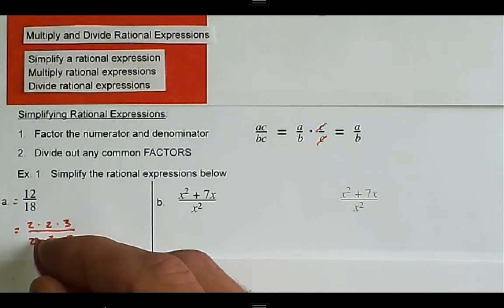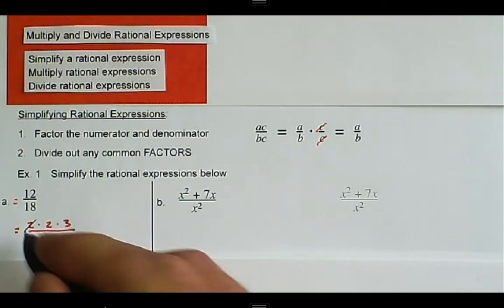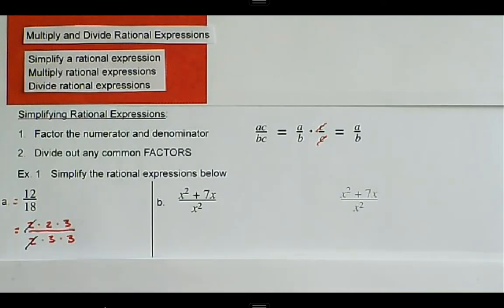And then we can cancel what we have, the common factors that we have from the numerator and the denominator. We have a 2 in the numerator that cancels a 2 in the denominator.